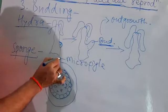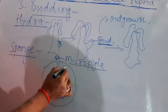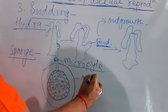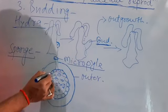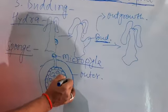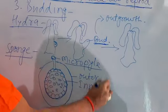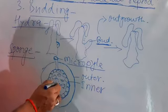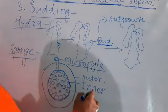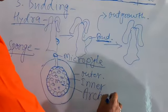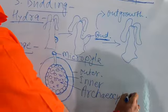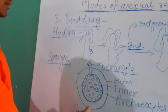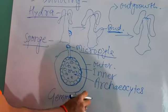This pore is known as micropyle and here the sponge is covered by outer membrane as well as inner membrane and a group of cells which are present inside. These cells are known as archeocytes and the structure is a gemmule.